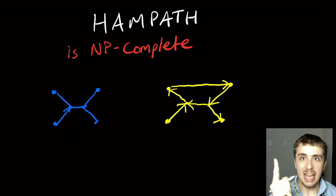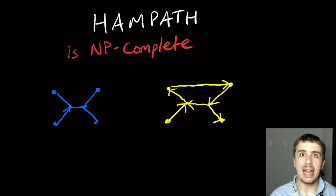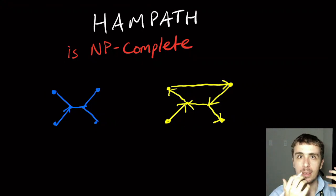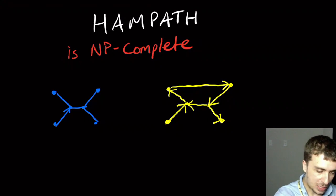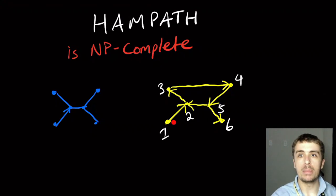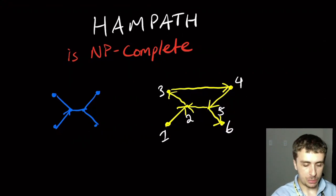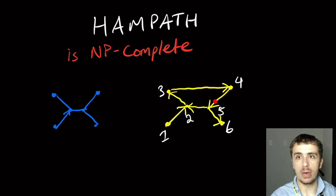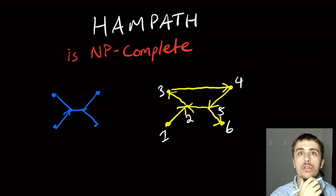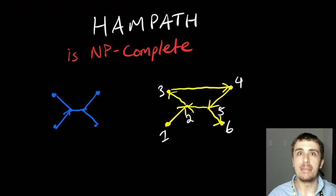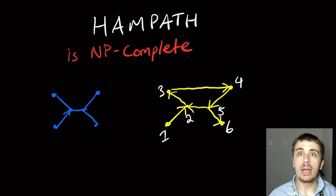Every NP-complete proof has to show the problem is in NP and is NP-hard. The language of all graphs that have a Hamiltonian path is in NP because you can be given as a certificate the permutation of the vertices. For example, given permutation 1, 2, 3, 4, 5, 6, all you need to do is verify: is 1→2 an edge, 2→3 an edge, and so on. The size of the certificate is the number of vertices, which is polynomial in the size of the graph.